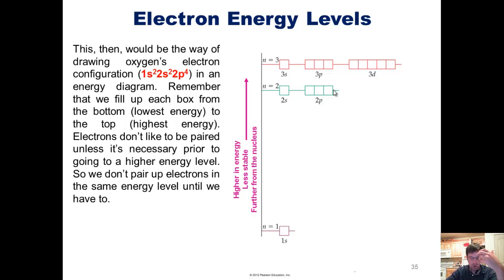This, then, would be the way of drawing oxygen's electron configuration, 1s2, 2s2, 2p4, in an energy diagram. Remember that we fill up each box from the bottom, lowest energy, down here, to the top, highest energy, in order.